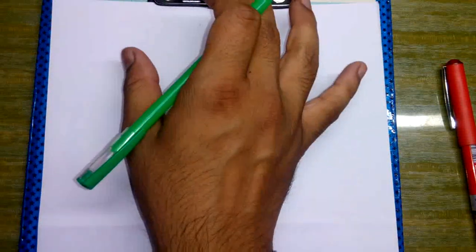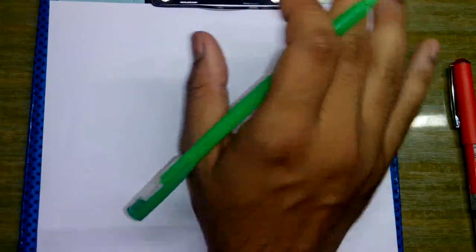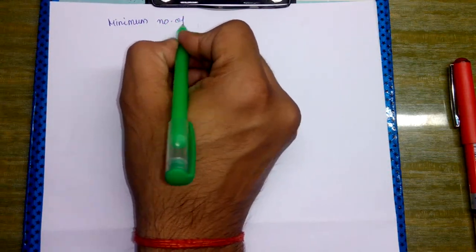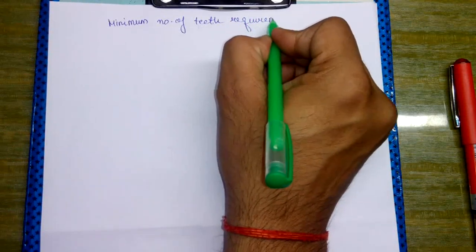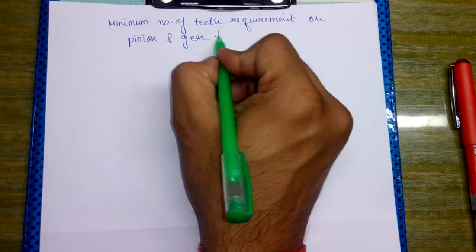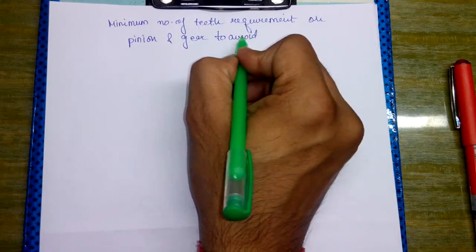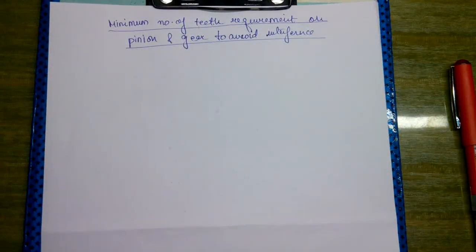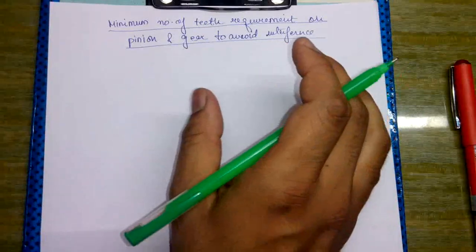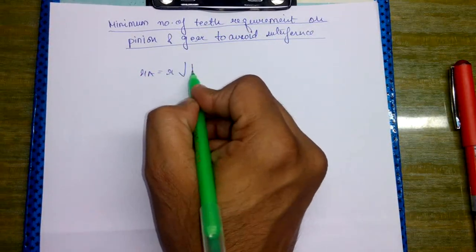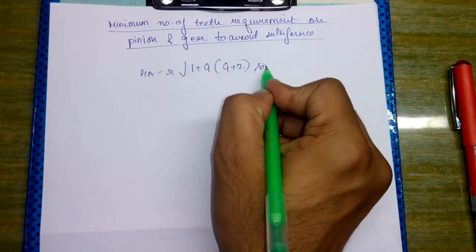Next we come to another important formula. I will simply discuss the main formula part because derivation is not important. Our discussion will be on minimum number of teeth requirement on pinion and gear to avoid interference. The formula is: RA equals R times the square root of 1 plus G times (G plus 2 sin squared phi).